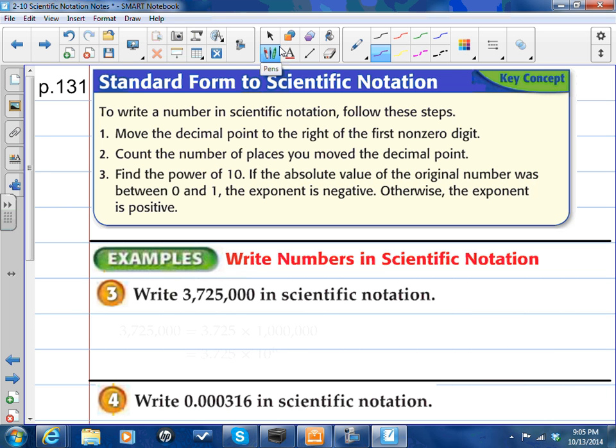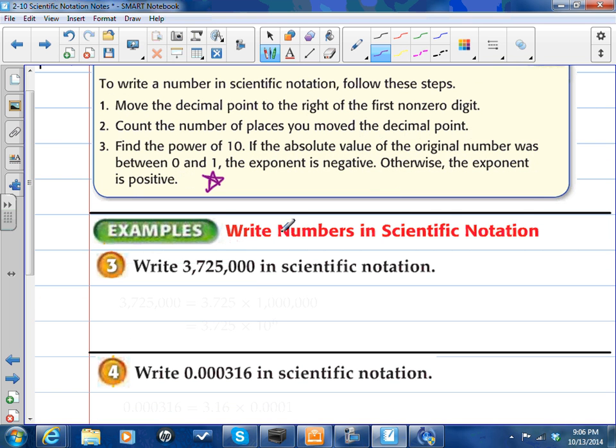The hard part for you guys is to go from standard form from writing a number and then putting it into scientific notation. So, here are some steps to help you remember. To write a number in scientific notation, you follow these steps. So, first, you move the decimal point to the right of the first non-zero digit. You're going to count the number of places you move the decimal and that's going to be your exponent value. And then you're going to find the power of 10. If the absolute value of the original number was between 0 and 1, the exponent is negative, otherwise the exponent is positive. This rule is a little tricky. So, kind of keep that in mind, but follow along and see if that can make more sense.